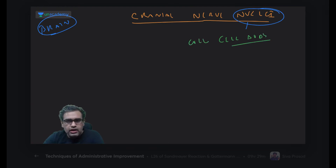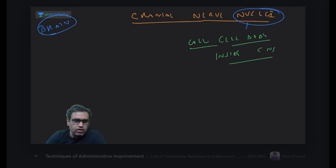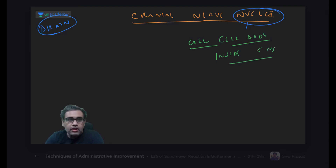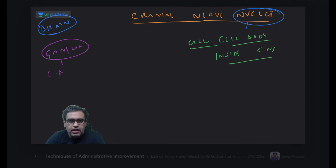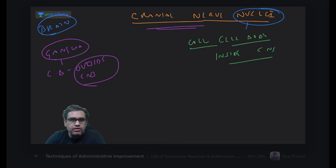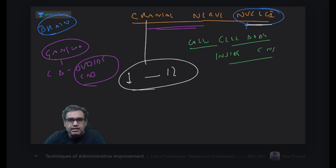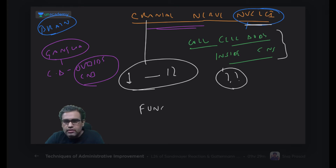When we use the word 'ganglia,' it is the same thing - a collection of cell bodies - but outside the CNS. That is the simple difference. Cranial nerves 1 to 12 - their nuclei are inside the CNS. Where are they and what are their functional components? That is the topic.